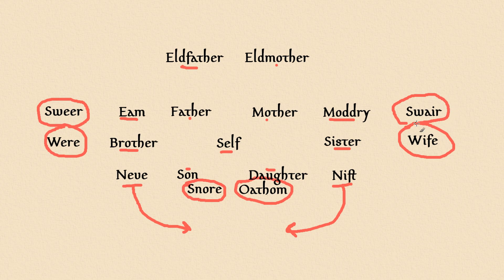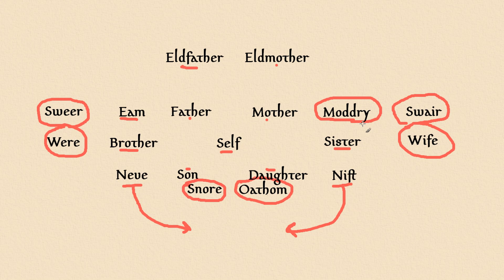I didn't find very good terms for cousins, but one thing I did find is the term madri-son in Middle English. This term could be used as an analogy to create all the other cousin terms, so you could say madri-son.